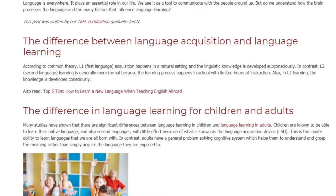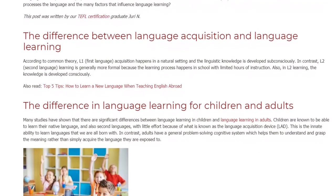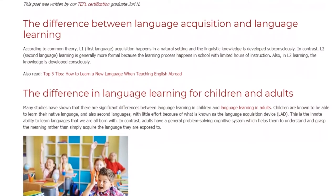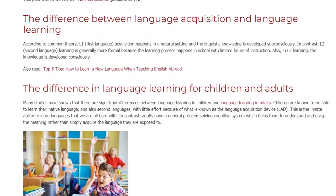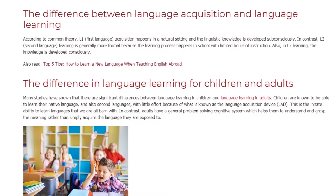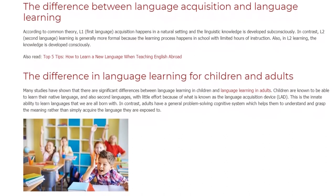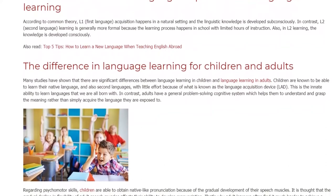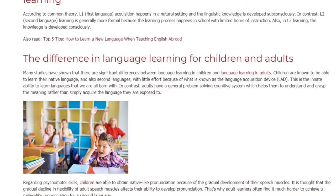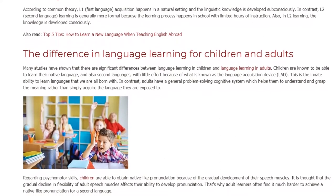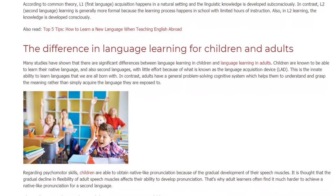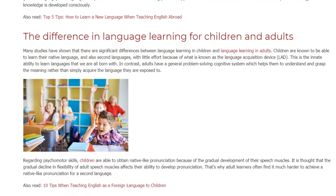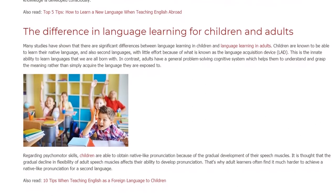In contrast, adults have a general problem-solving cognitive system which helps them to understand and grasp the meaning rather than simply acquire the language they are exposed to. Regarding psychomotor skills, children are able to obtain native-like pronunciation because of the gradual development of their speech muscles. The gradual decline in flexibility of adult speech muscles affects their ability to develop pronunciation, which is why adult learners often find it much harder to achieve a native-like pronunciation for a second language.